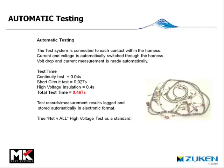Now considering the same harness tested automatically, we're looking at a fraction of the time — less than half a second. All test results are created, reported, and logged automatically, so there is no manual error. Importantly, automatic testing performs the same test the same way every time — it's computer controlled — giving a consistent test process and guaranteeing consistent product quality.